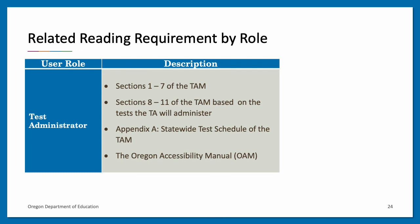In addition to completing the required modules, test administrators also have the following reading requirements: sections 1 through 7 of the TAM, sections 8 through 11 of the TAM based on the specific test the TA will be administering, Appendix A which covers the statewide test schedule, and the Oregon Accessibility Manual to become familiar with which accessibility supports are available for students.